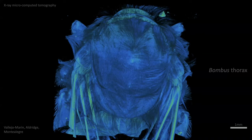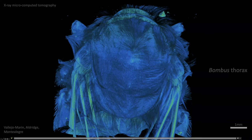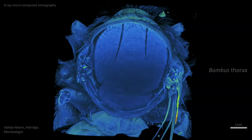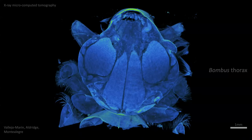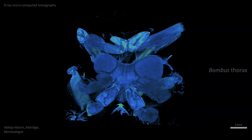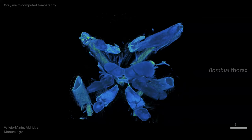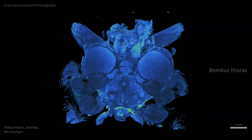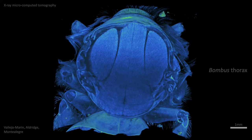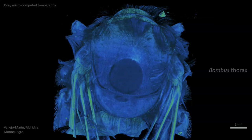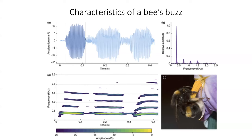Now I want to go from the diagram to an animated micrograph of the bee's thorax to show you these muscles causing buzz pollination. This is an X-ray micro-CT scan animation conducted with Fernando Montalegre and colleagues, which zooms into the bee's thorax. In this animation you can see the big thoracic muscles — a pair appearing on the sides and another pair in the center — and it's the contraction of these muscles that cause the thorax to vibrate and consequently the flower to vibrate as well.